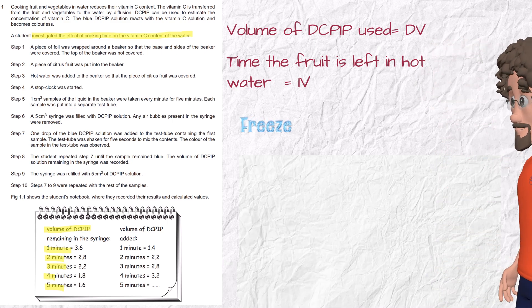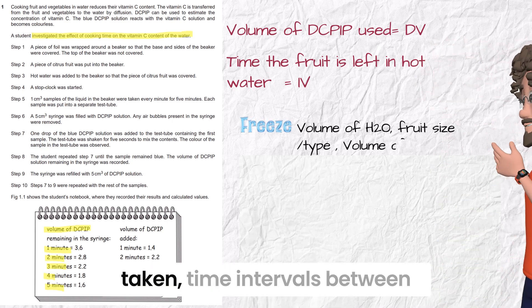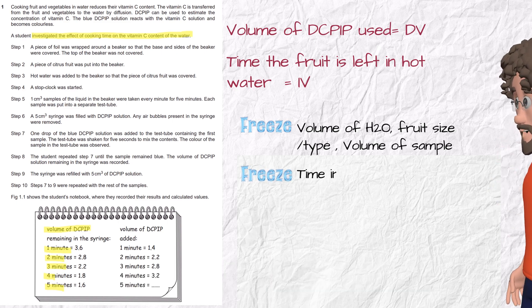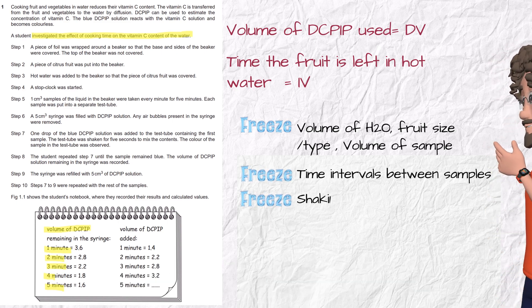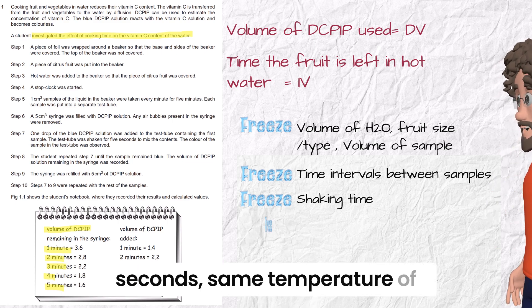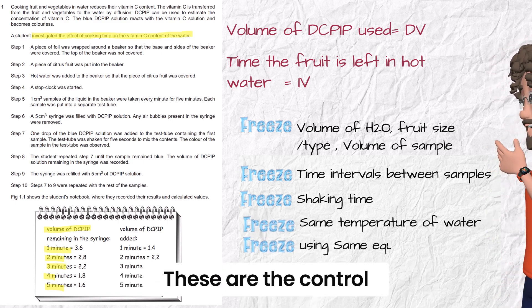What to freeze? Volume of hot water, size or type of fruit, volume of sample taken, time intervals between samples (here done every one minute), shaking time (fixed for five seconds), same temperature of water, and using same equipment. These are the control variables.